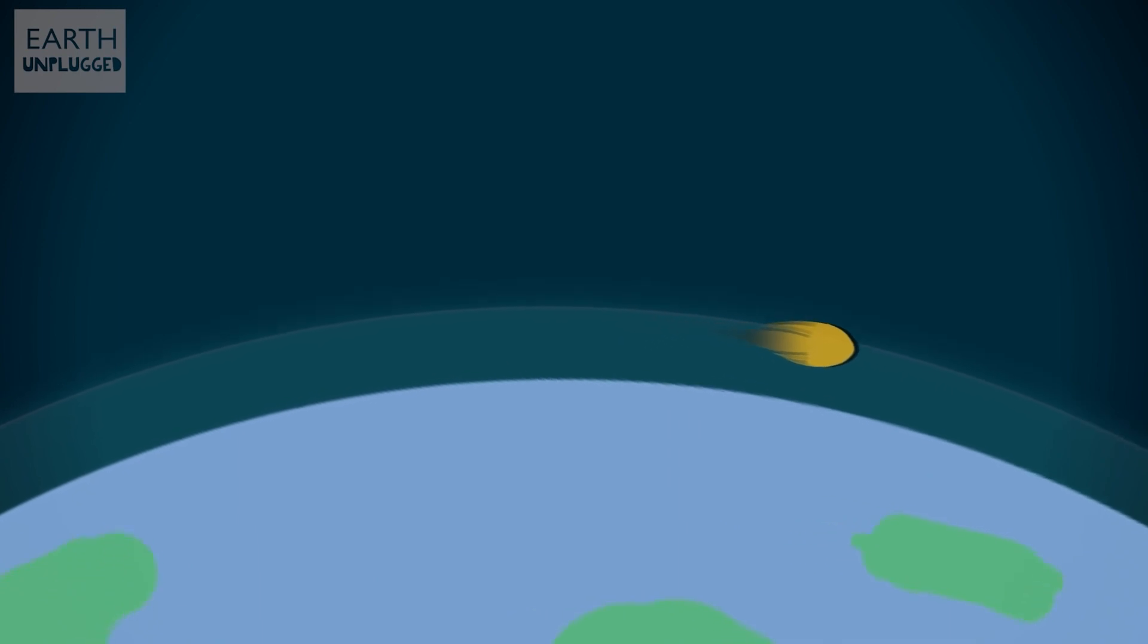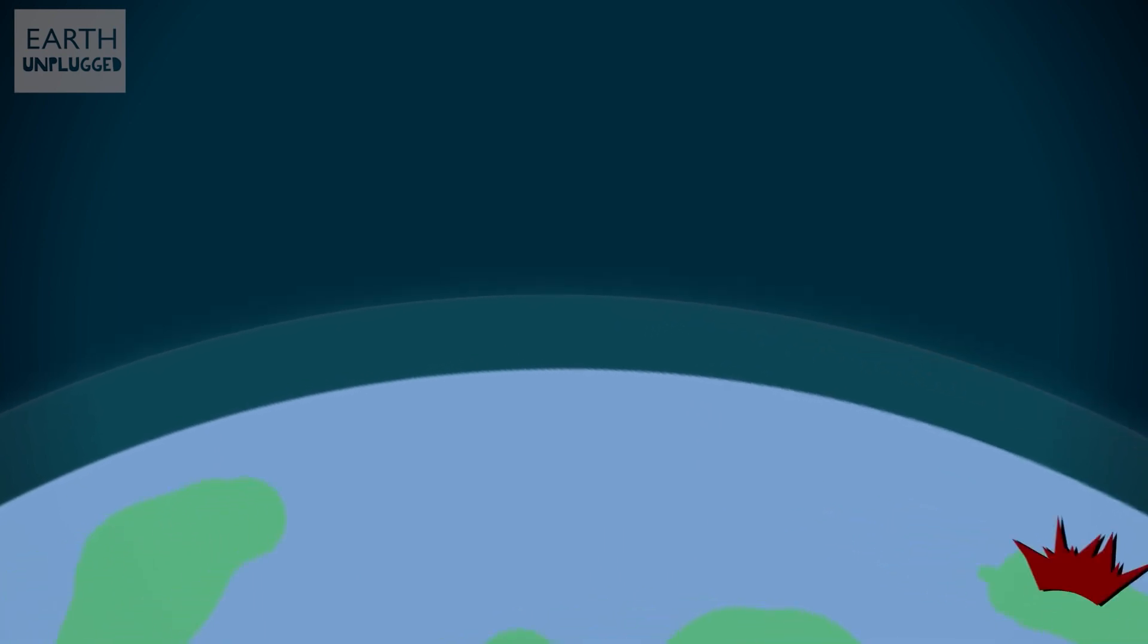A fireball is defined as a meteor that burns brighter than the light reflected off the planet Venus. When a meteor hits the ground, it becomes a meteorite, and it's thought that there are between 10 and 50 meteorite dropping events every day.